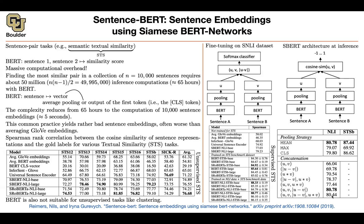Out of those options, the concatenation with the absolute value of the subtraction gives the best number, and that's what you use for the natural language inference classification head. For the pooling operation, you have choices: average the vectors, pick the maximum value per entry, or use the CLS token vector. Average pooling gives the best result, and that's how you choose your pooling and concatenation strategy.